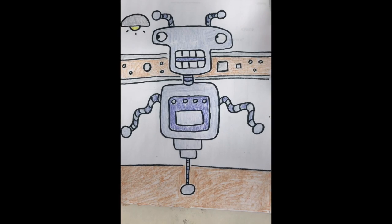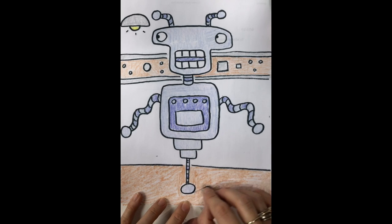Now that I've outlined and colored it, the next step is to add some value. Adding value to this robot is a little more complicated because there are so many parts to it. I'm going to start by doing a cast shadow on the floor.